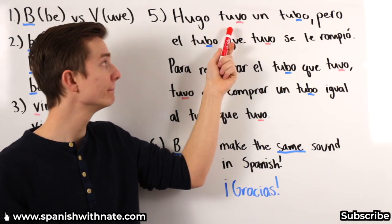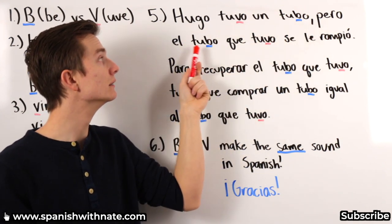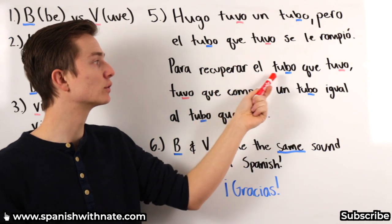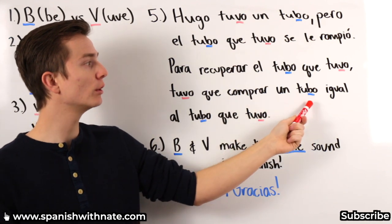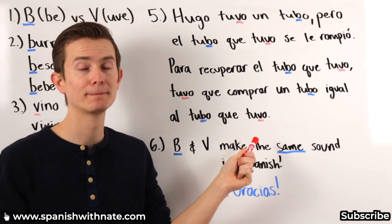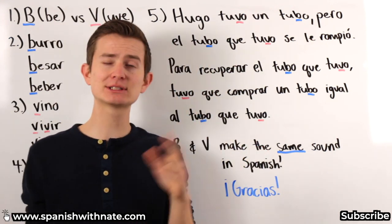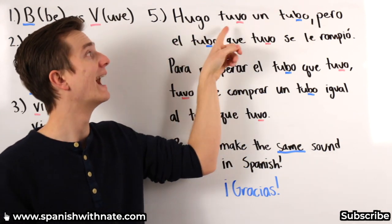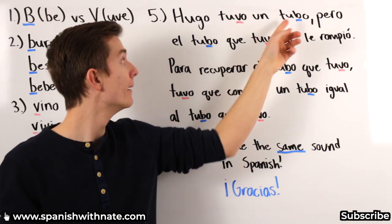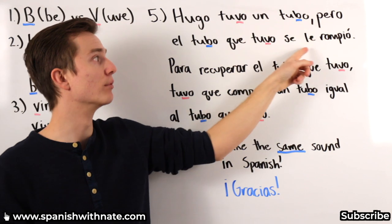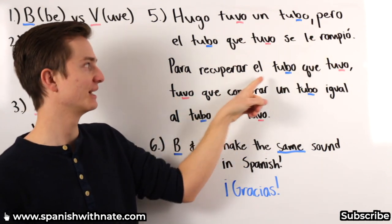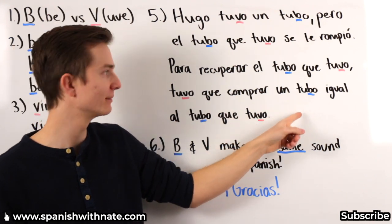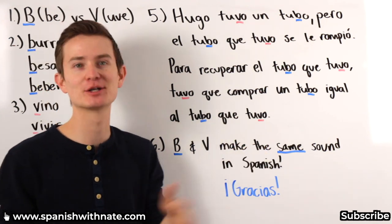Let's go through it slowly — say it with me. Hugo tuvo un tubo, pero el tubo que tuvo se le rompió. Para recuperar el tubo que tuvo, tuvo que comprar un tubo igual al tubo que tuvo. This is an awesome little tongue twister — it actually makes some sense. We can translate it: Hugo had a tube or a pipe, but the pipe that he had broke. In order to get back the tube that he had, he had to buy a tube like the tube that he had.